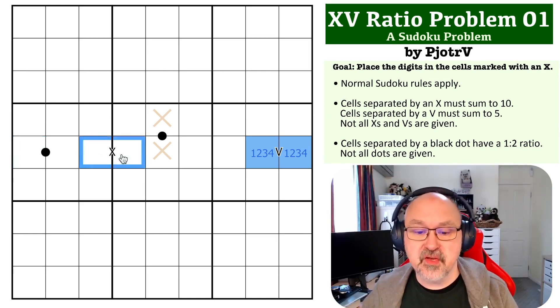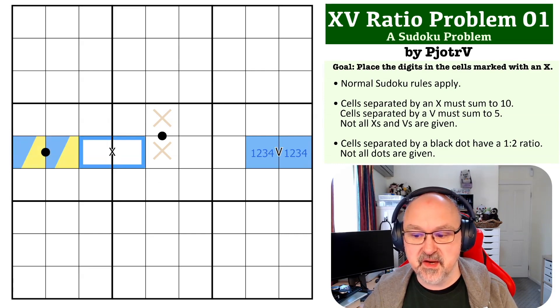So because I've already used three of the four low digits, this has to be a low and a high as well as this being a low and a high. Now I don't know the order of them.